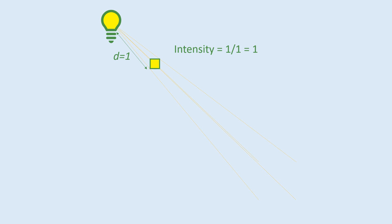We're using relative units here, but in this case, the intensity would be one amount of light per square. So one divided by one, giving us an intensity of one.